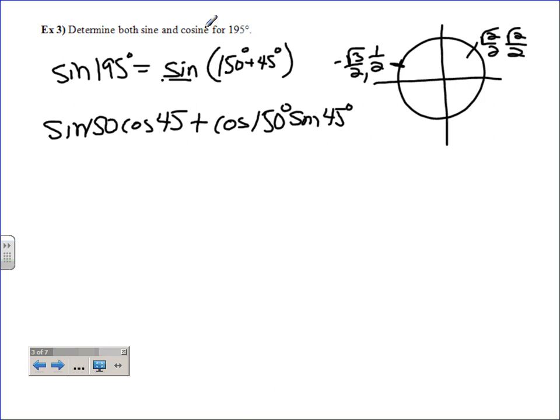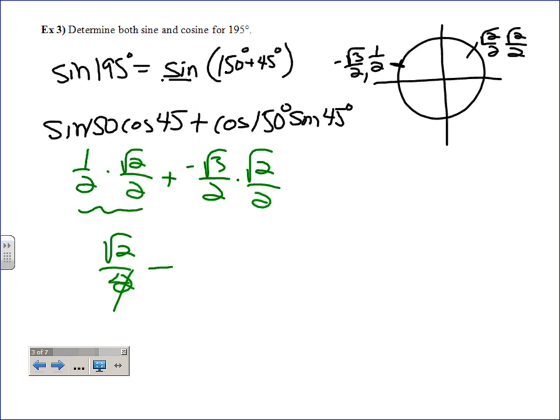So sine of 150, one-half, square root of 2, plus negative square root of 3 over 2. So this becomes over 4. Should we just put minus? This is a 4, not bad.